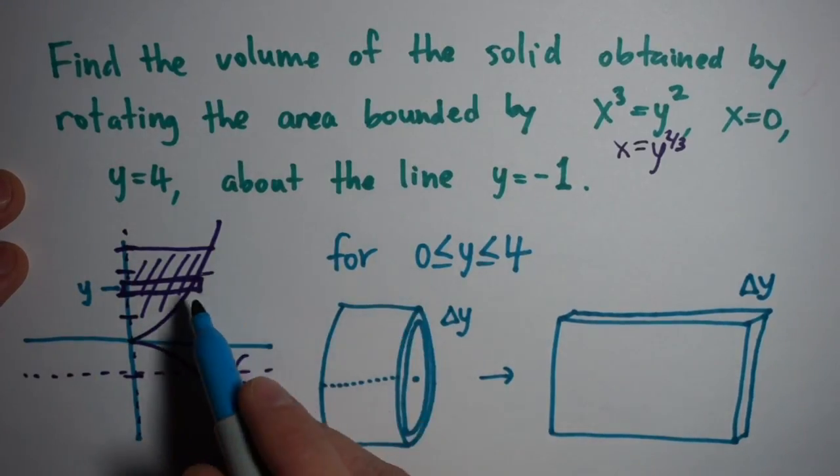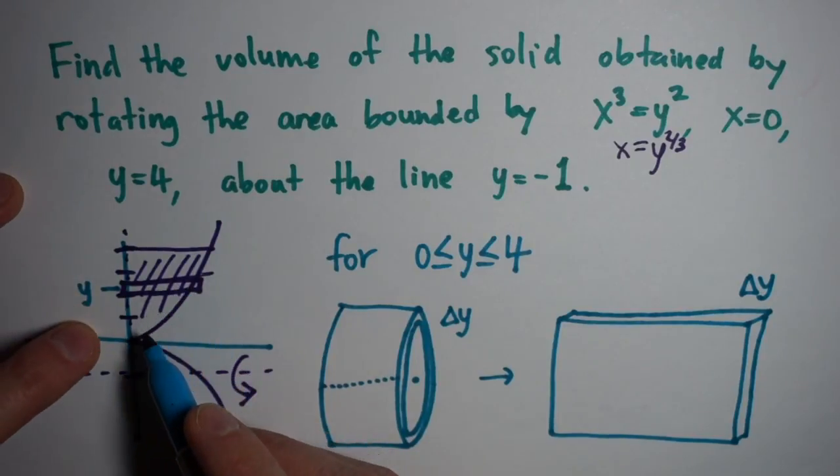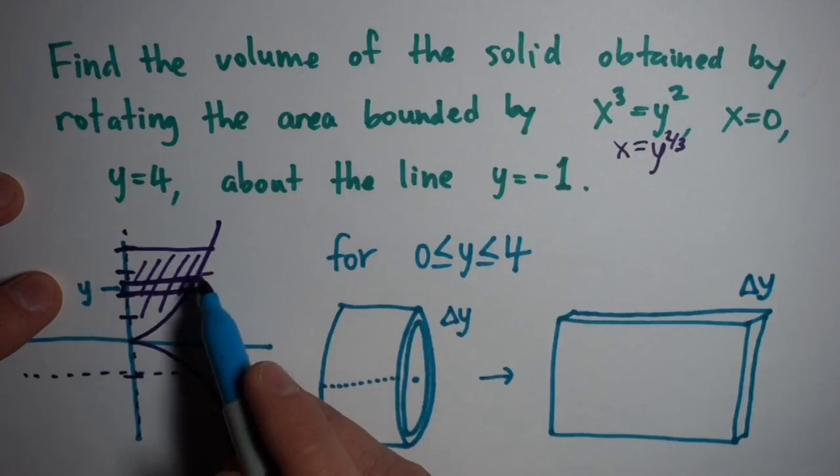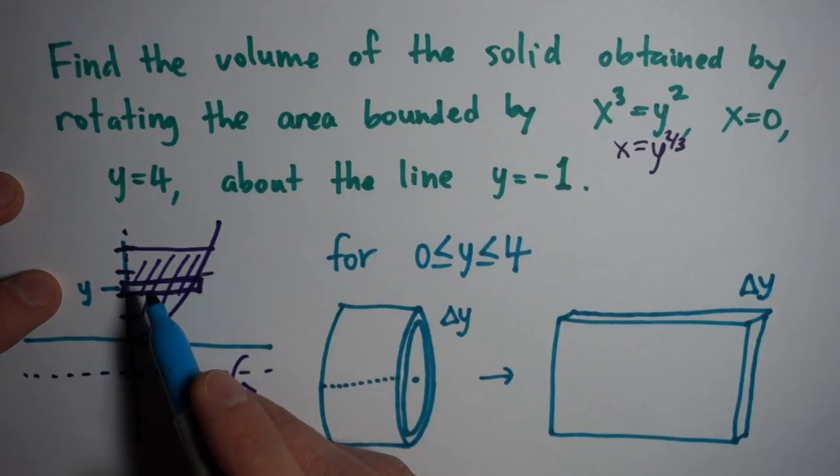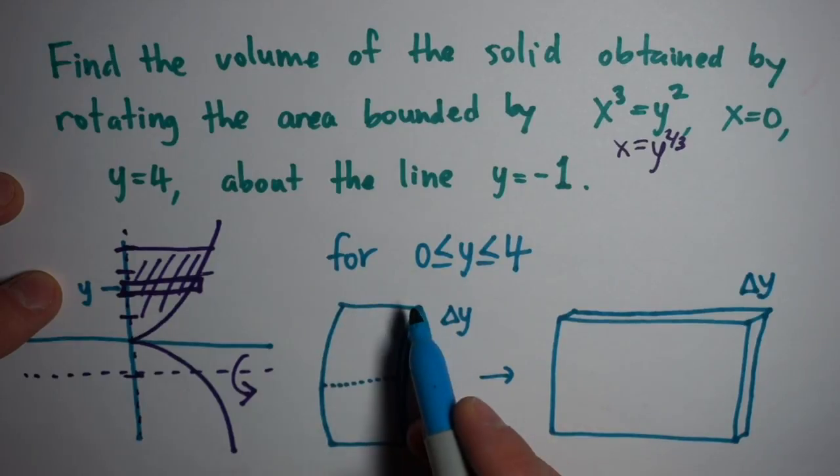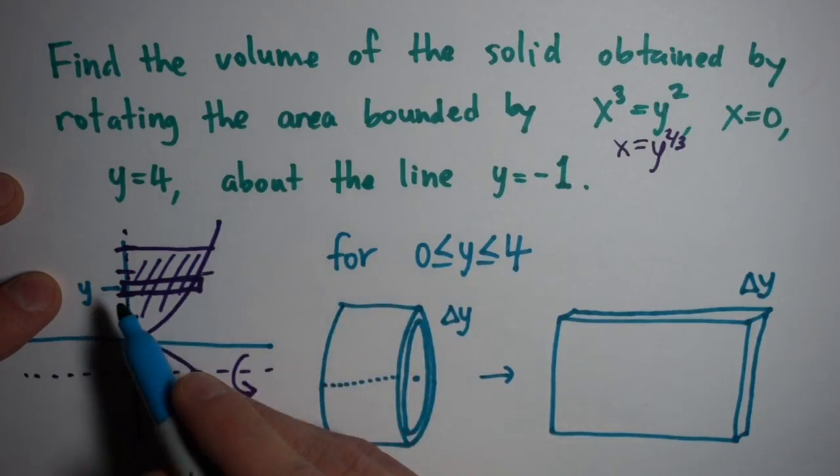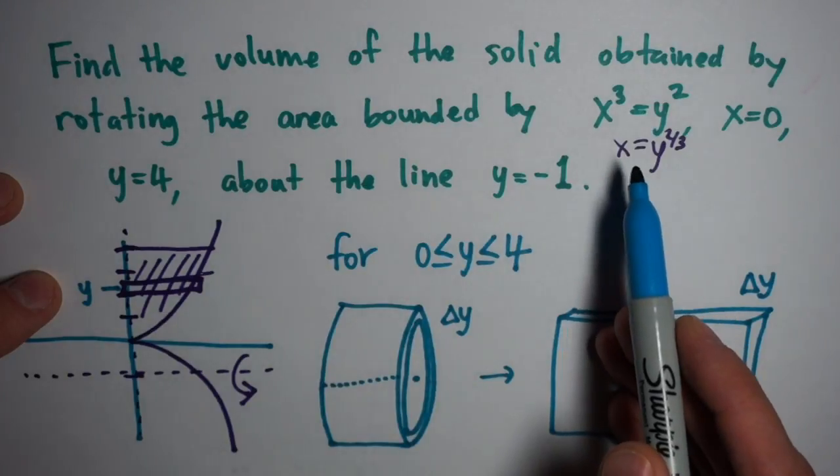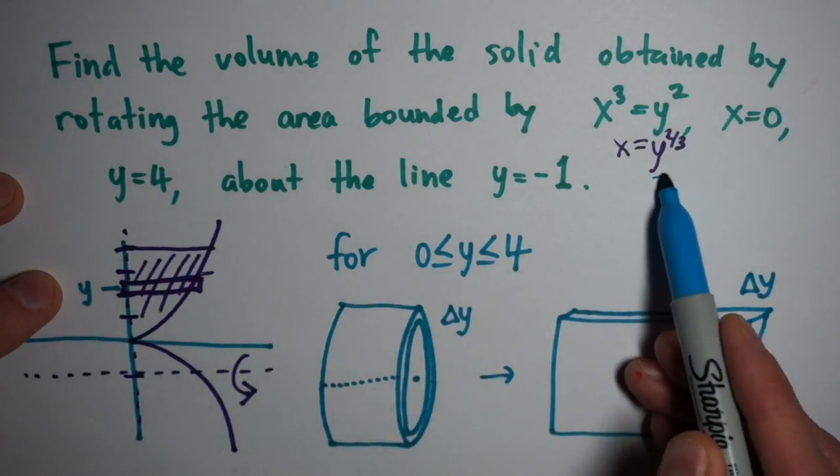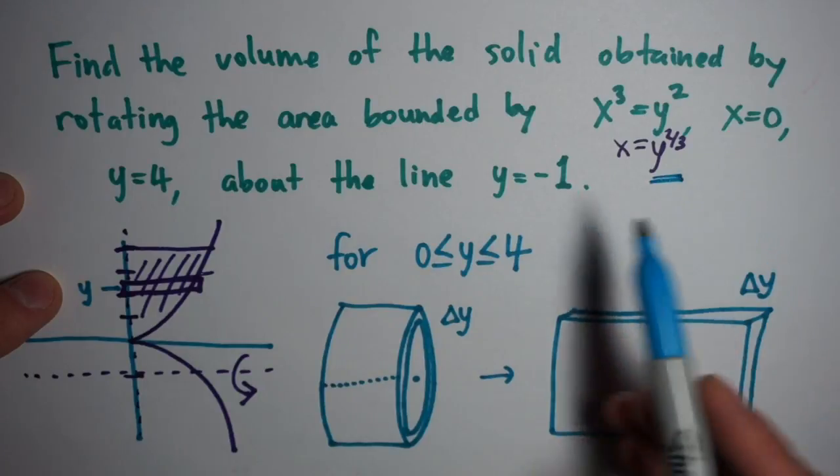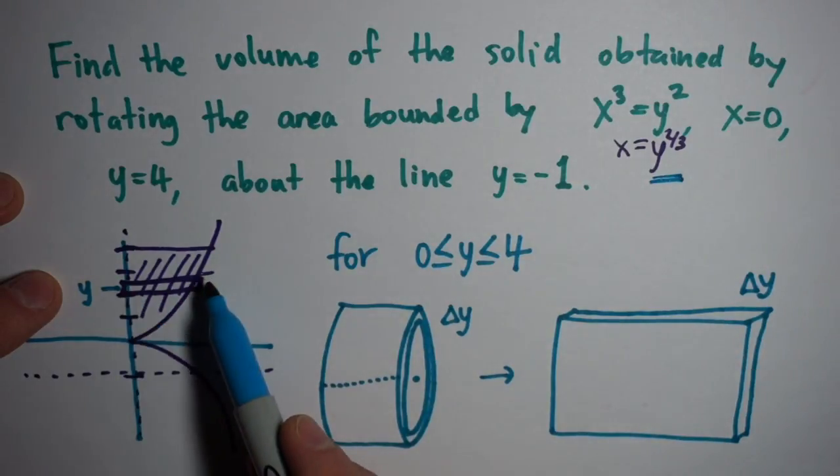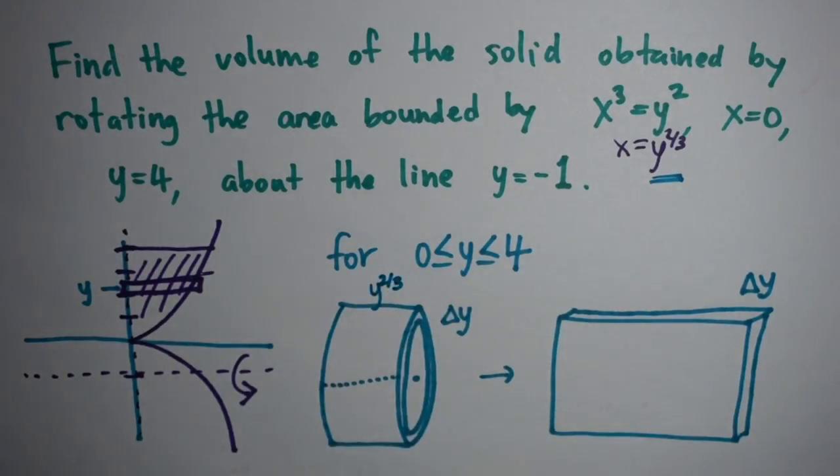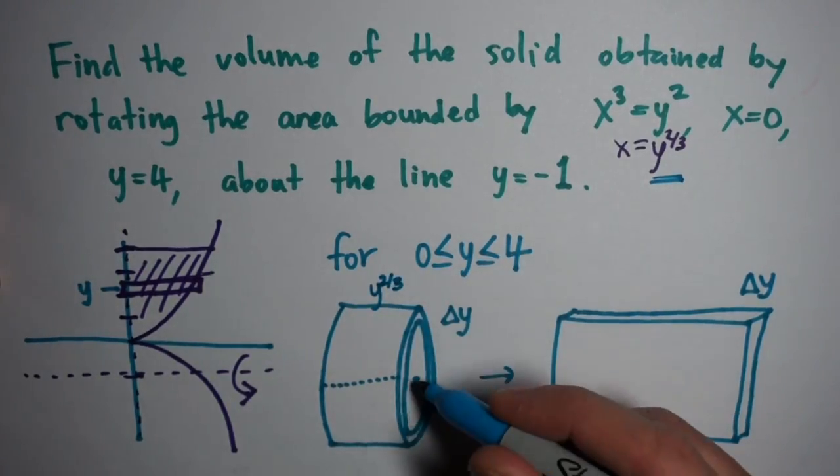The width of the shell is given by the size of the rectangle we started with, and that comes directly from the function itself. Given a y value, we need to figure out how big this rectangle is. The function was given implicitly, but if you solve for x in terms of y, it'll tell you the width of the rectangle, how far the function is from the y-axis. In this case, the width of our shell is y^(2/3).